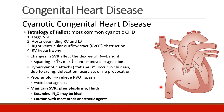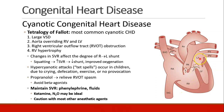One of the most common cyanotic congenital heart diseases is called tetralogy of Fallot. It has four components: a large VSD; the aorta overriding the right and the left ventricle, so right ventricular blood can go straight out the aorta; right ventricular outflow tract obstruction, where the outflow tract is narrowed, again encouraging blood to shunt to the left side; and right ventricular hypertrophy.